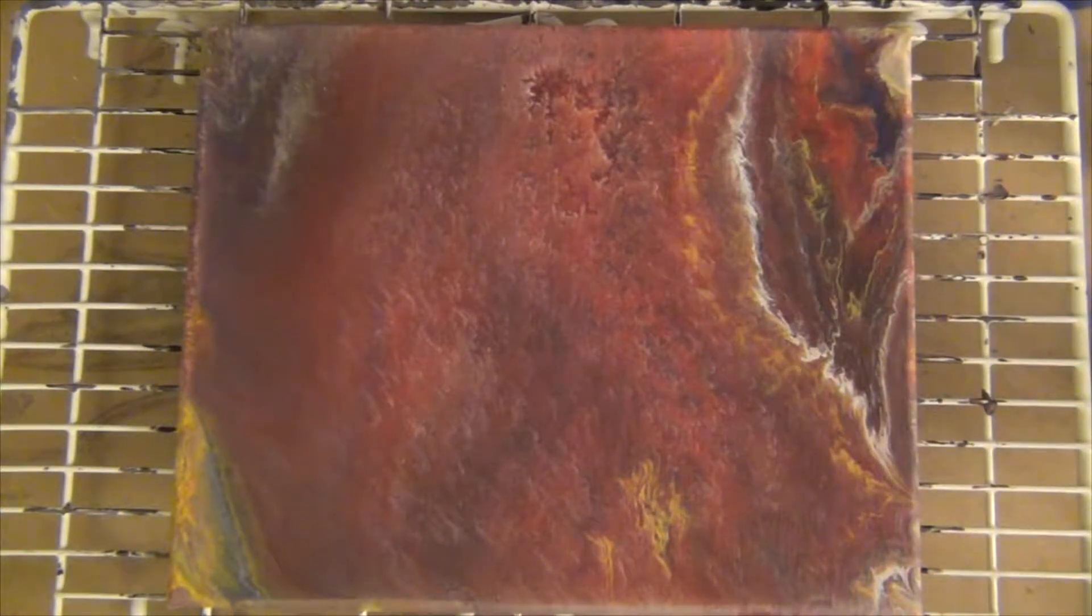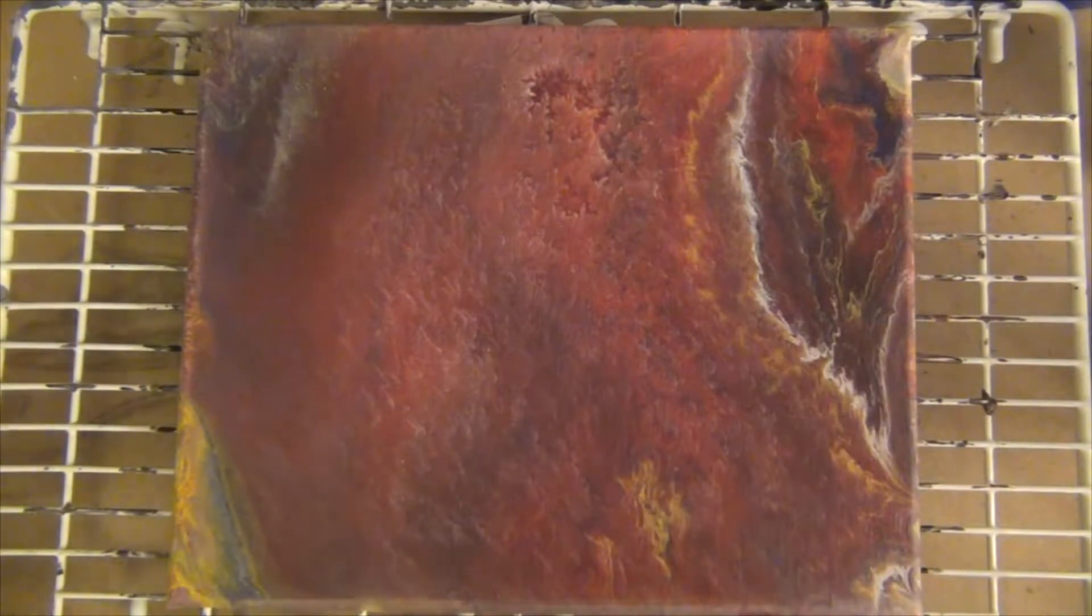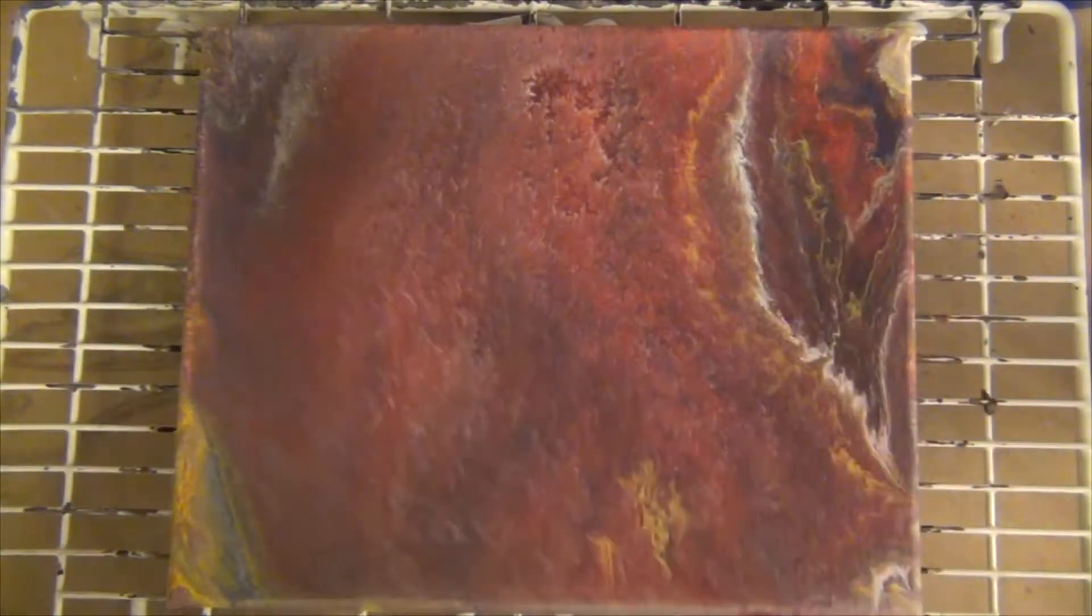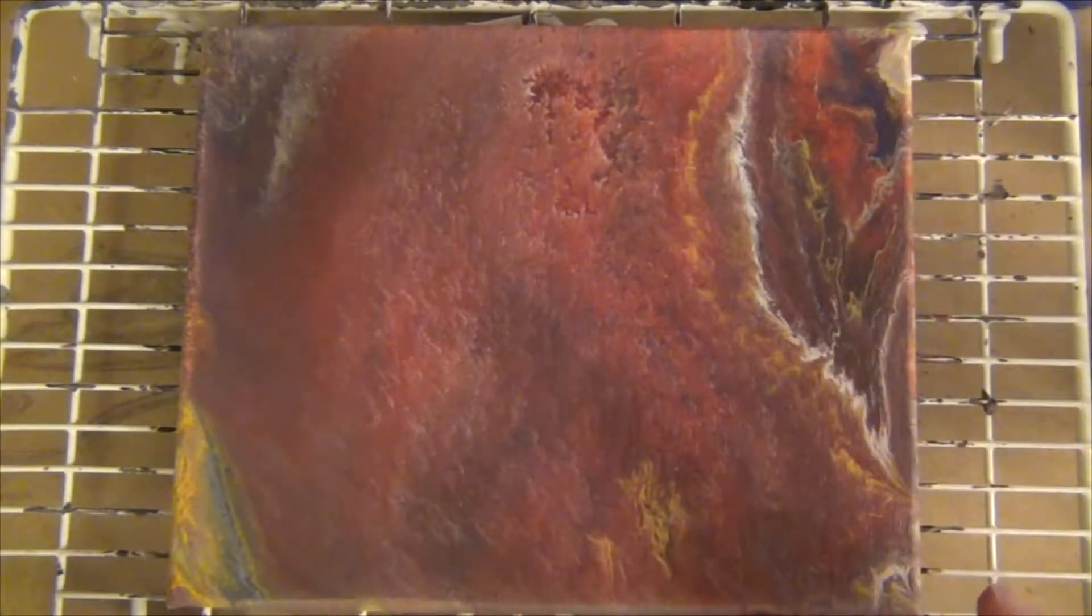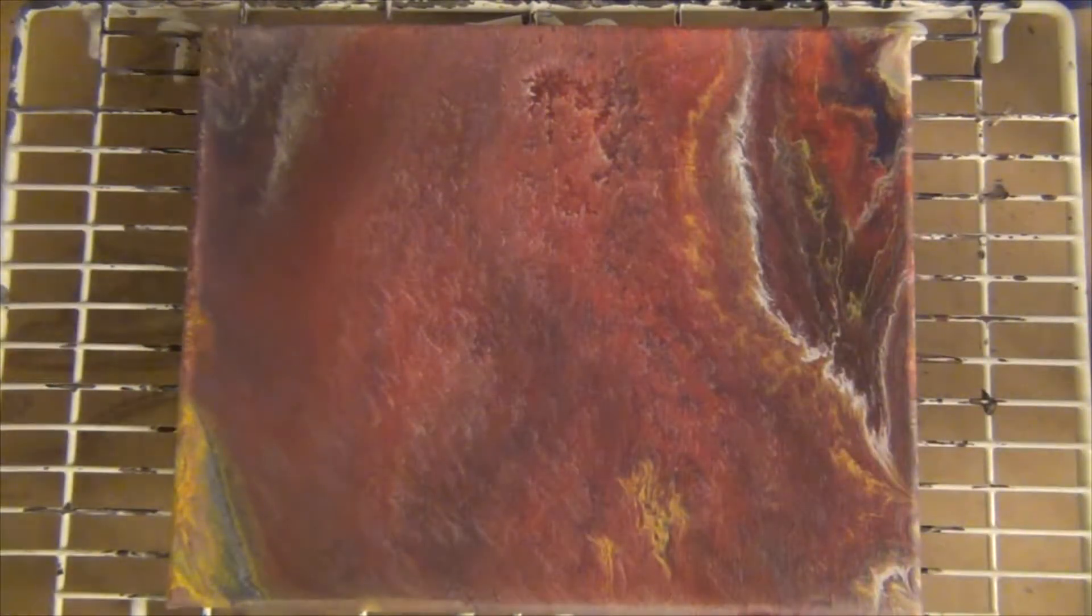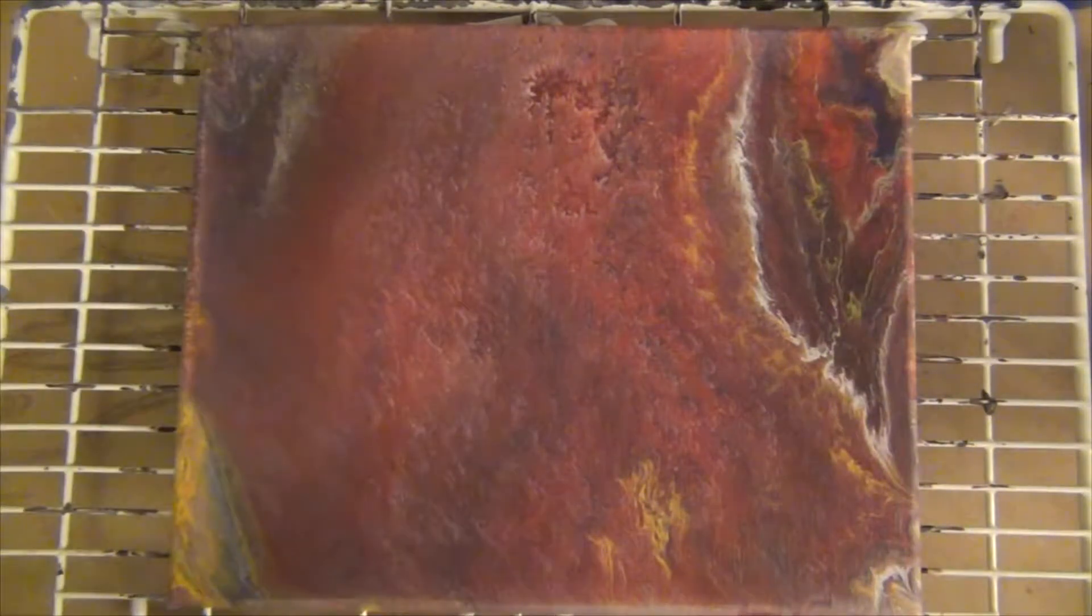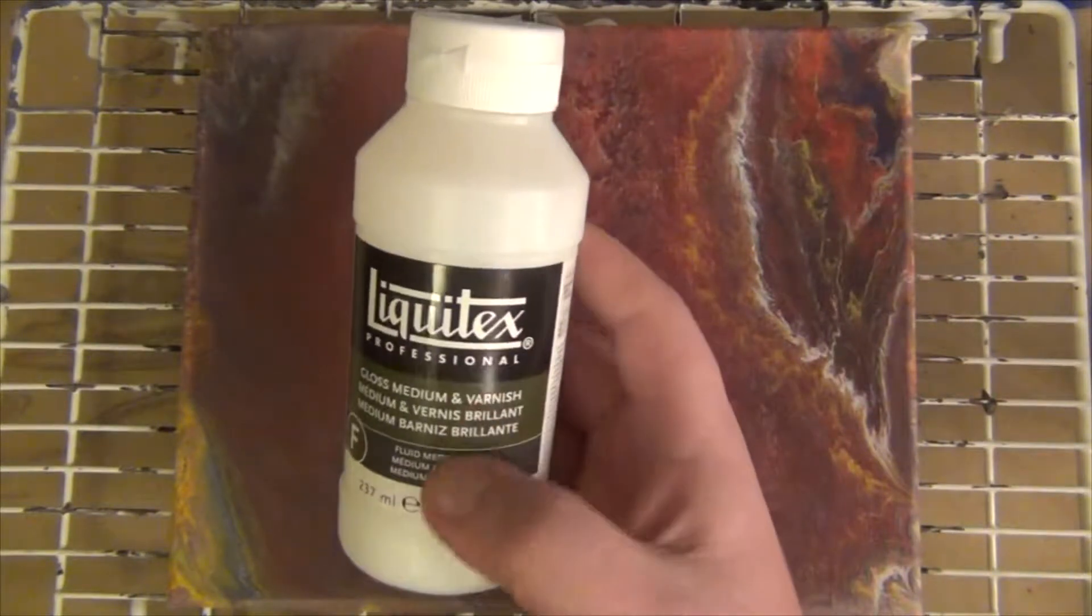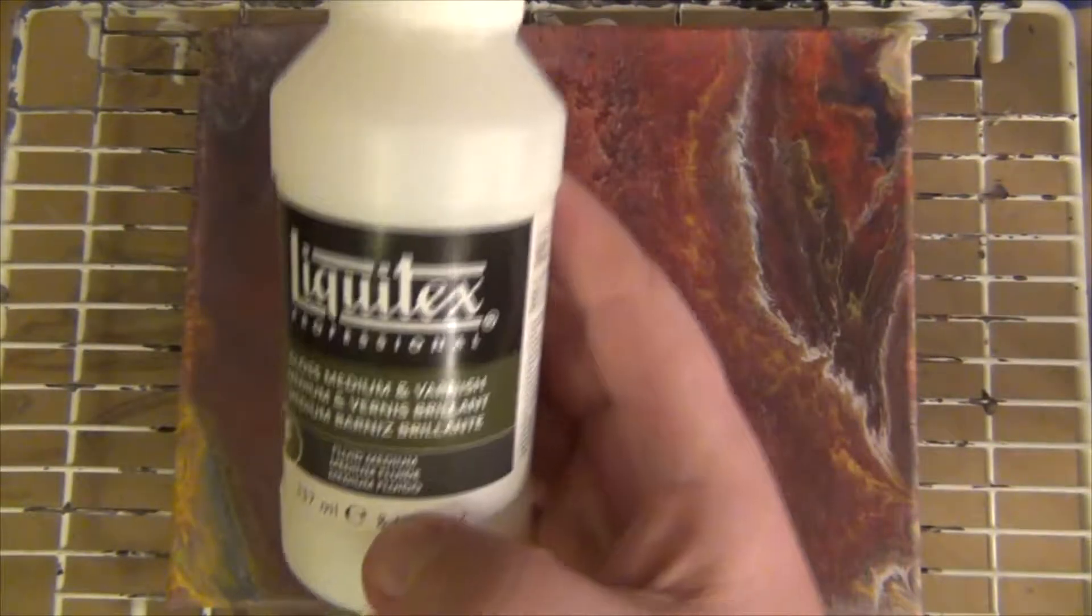But my girlfriend, she kind of really liked this one, even though it's kind of drab. And she said, well, isn't there something you can do to varnish it? And I was like, okay, let's try to varnish it. If it ruins it, that's fine because I don't like it anyway. But she really likes this one. She says it looks like an agate. And she's really into rock hounding.